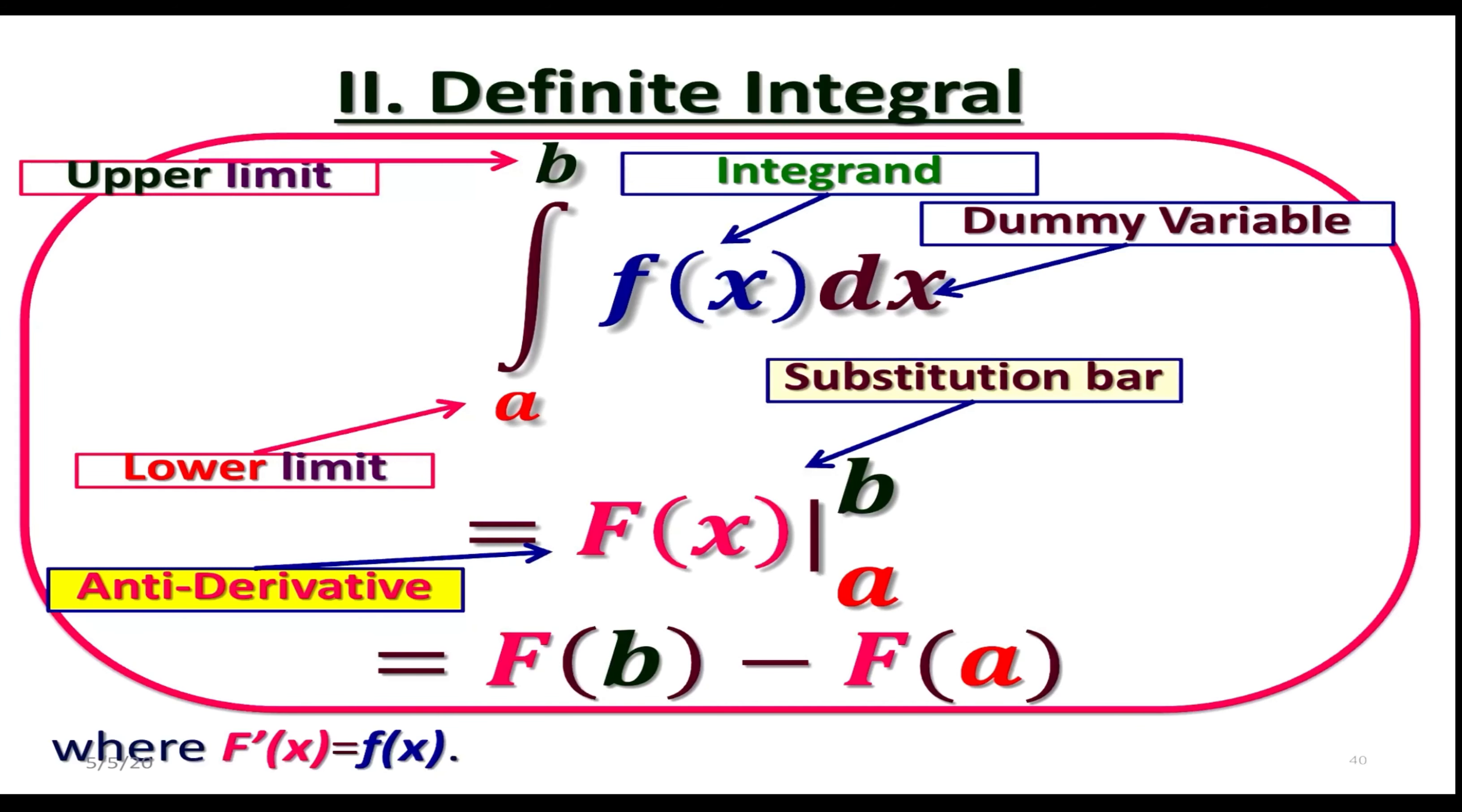We are going to draw a substitution bar, a vertical line, and we are going to place these two limits, a and b. a goes on bottom, b goes on top.